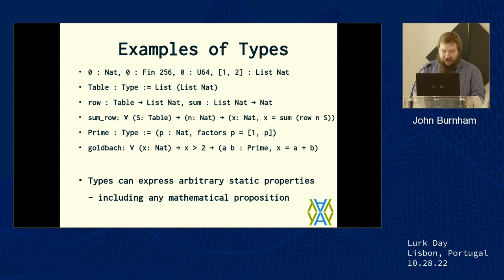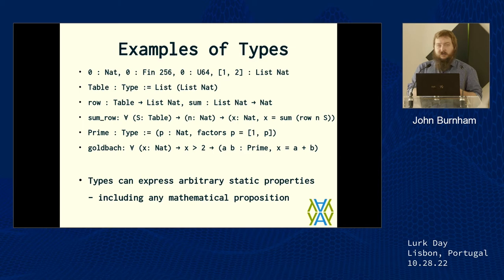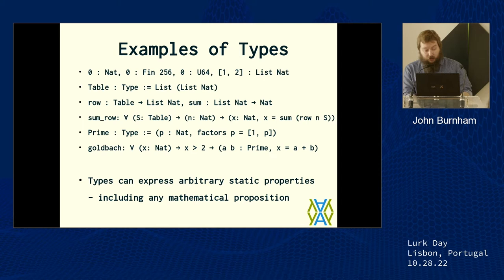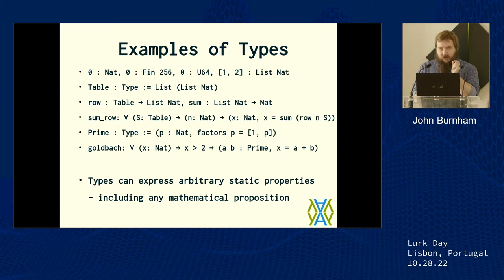We have natural numbers. We can have types that are bounded natural numbers — natural numbers between 0 and 255, or the type U64, which is natural numbers between 0 and 2 to the 64 minus 1. We can also make list types, lists of lists, functions that do things over lists — all of that should be pretty familiar from statically typed languages like Rust or Haskell. But there are systems that let us do something called dependent types, which let us go further and lift program values directly into the type system, so we can reason about specific programs and specific values.